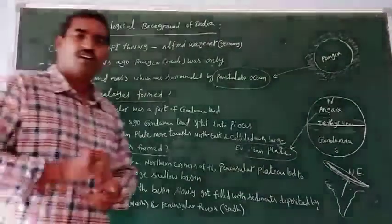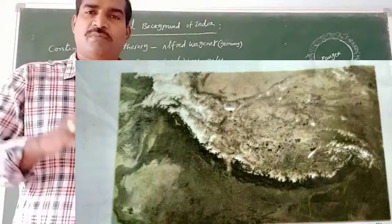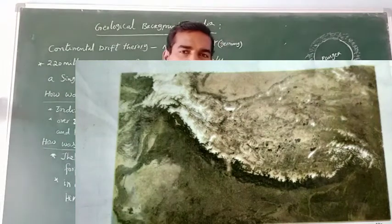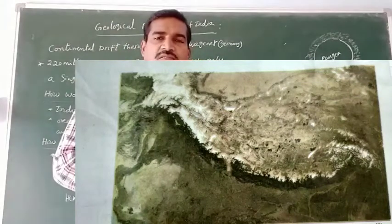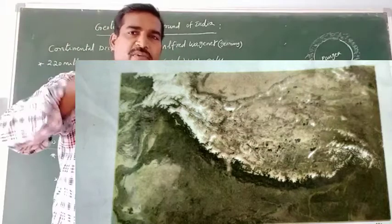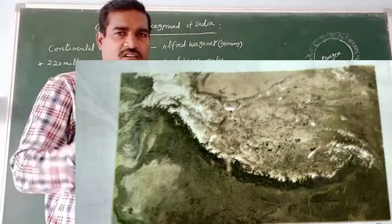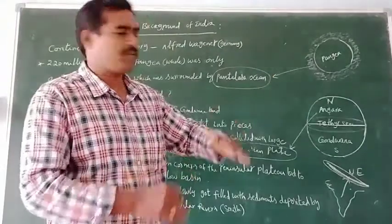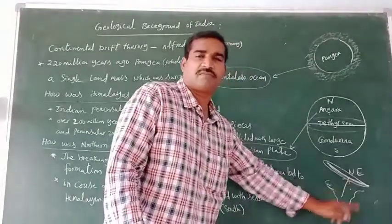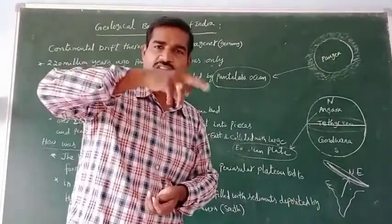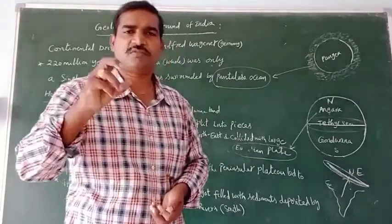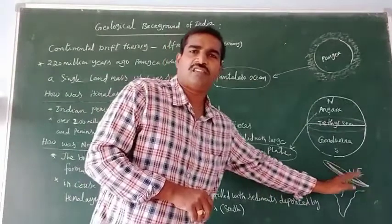Now we will discuss about how the northern plains were formed. Due to the breaking of the northern corners of the Indian peninsular plateau, a large shallow depression was formed. This large shallow depression was slowly filled with sediments brought by the rivers — from the north side by Himalayan rivers and from the south side by peninsular rivers. In this process, our present form of the northern plains were formed.